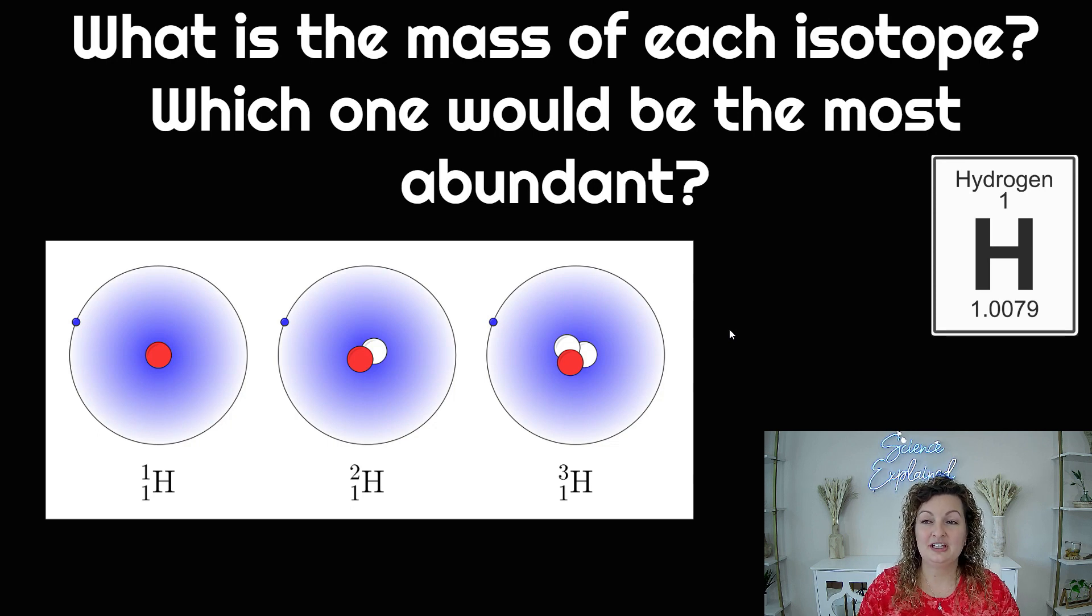Okay, let's go ahead and get into our next thing. So what is the mass of each isotope? Which one would be the most abundant? You can see here we have three models, all of hydrogen. However, they are isotopes of one another. You can see that the red dot is representing our one proton, which makes that hydrogen. And then the white dots are our neutrons.